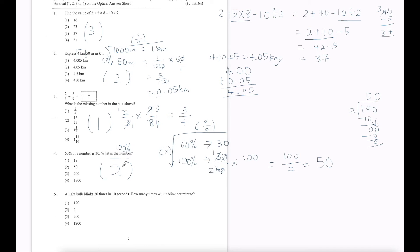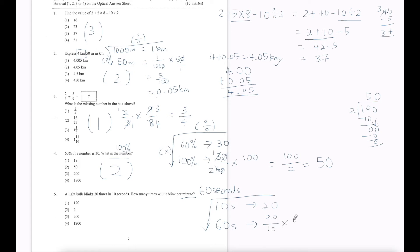Question 5: A light bulb blinks 20 times in 10 seconds. How many times will it blink per minute? One minute is 60 seconds. Using the same divide-times method: 20 divided by 10 times 60. Cross-cancel: we're left with 2 times 60, which is 120. So the answer is option 1.